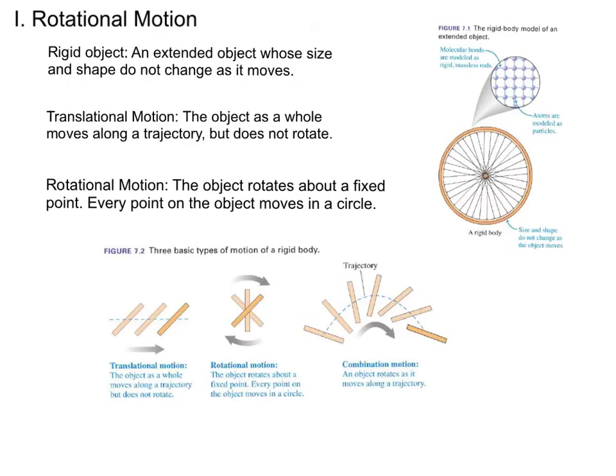In order to accomplish those goals we first have to cover some basic terms. So far our study of physics has focused almost exclusively on the particle model, which takes an object and reduces it down to a single point mass. Now we're going to be focused on rigid objects, or a rigid body, which is an extended object whose size and shape does not change as it moves.